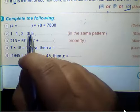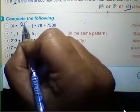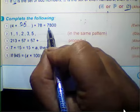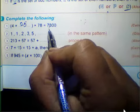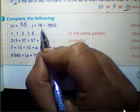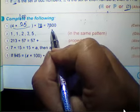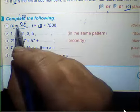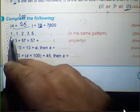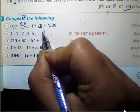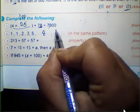4 multiplied by 25 multiplied by 78 equals 7800, because 78 multiplied by 100 equals 7800, and 4 multiplied by 25 equals 100. The sequence: 1 plus 1 equals 2, 2 plus 3 equals 5, 3 plus 5 equals 8, 8 plus 5 equals 13.